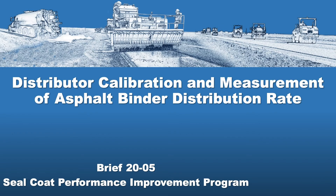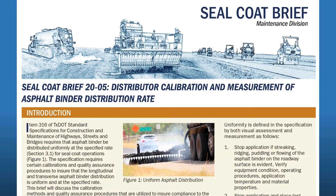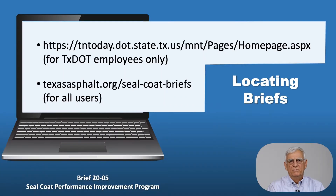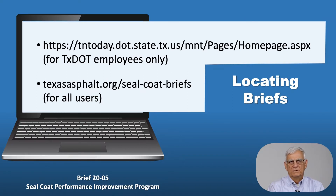Today we're going to talk about Brief 20-05, which is a brief on distributor calibration and measurement of asphalt binder distribution rates. This brief is available on two different websites — one is for TxDOT employees only, as shown at the top of the slide, and the other is for all users: the TexAPA website, texasasphalt.org, with some finding information after that.